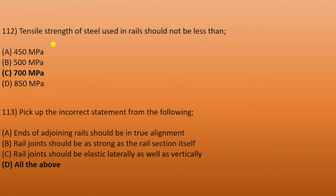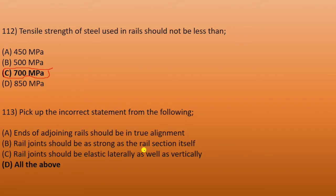Next: pick up the correct statements from the following. The ends of a joining rail should be in true alignment. Rail joints should be as strong as the rail section itself. Rail joints should be lasting laterally as well as vertically. Rail joints being weak is not acceptable. So the answer is all of the above — all these are correct statements.